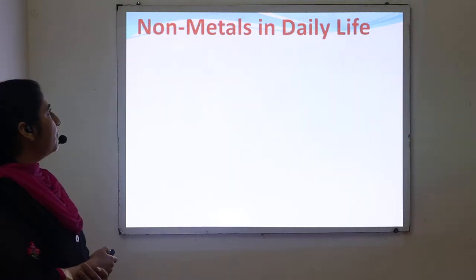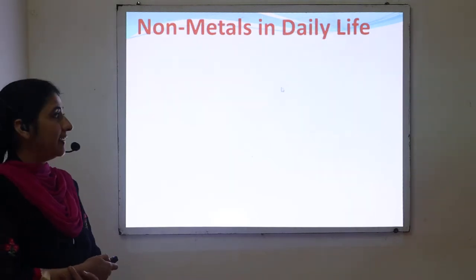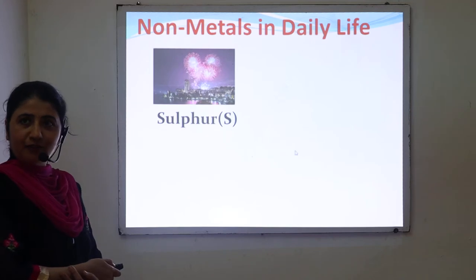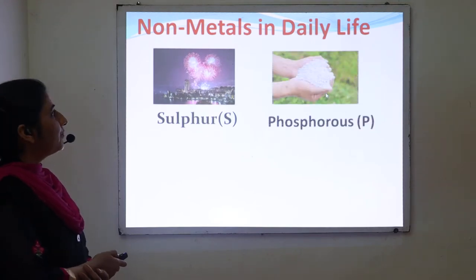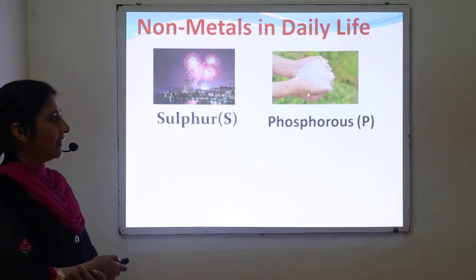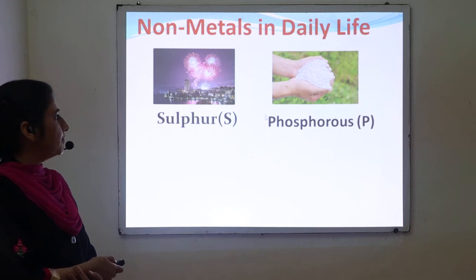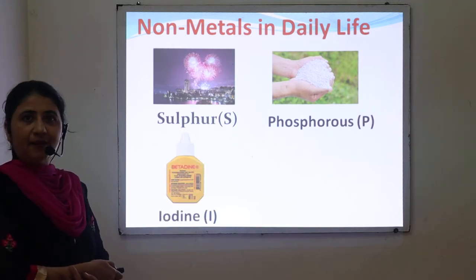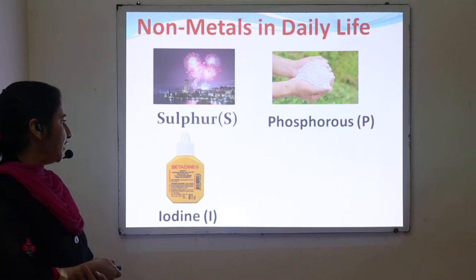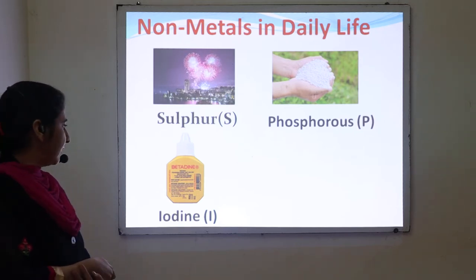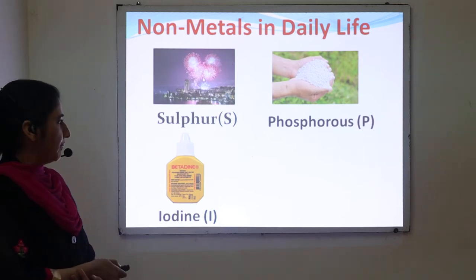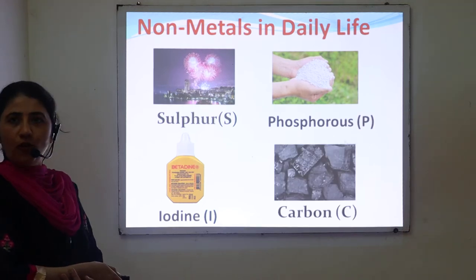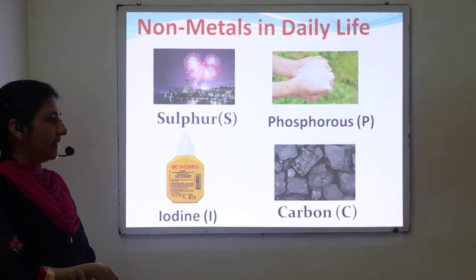Non-metals used in daily life include firecrackers which are made up of sulfur and carbon, fertilizers which contain phosphorus mainly, Betadine which acts as an antiseptic and is used for healing wounds and contains iodine as a non-metal, and coal which contains carbon.